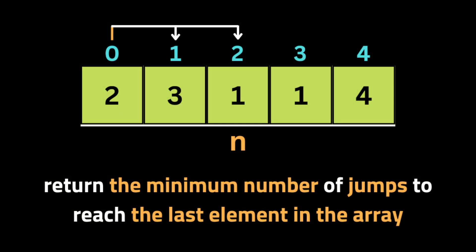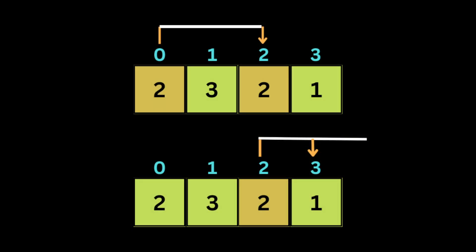The task is to return the minimum number of jumps needed to reach the last element in the array. For example, if we have this input array, the number of jumps needed to reach the last index is 2.